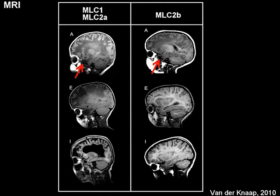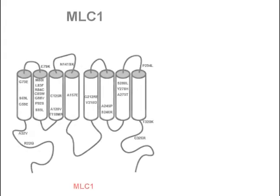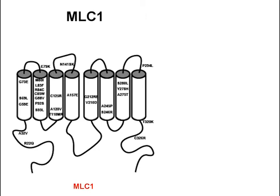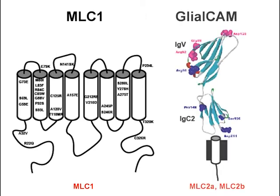There are two genes that cause MLC disease. Our group has identified, in collaboration with the group of van der Knaap, that mutations in MLC1 cause 75% of cases, and mutations in GlialCAM are found in the rest. Mutations in MLC1 lead to MLC type 1, and mutations in GlialCAM lead to MLC type 2A and type 2B.